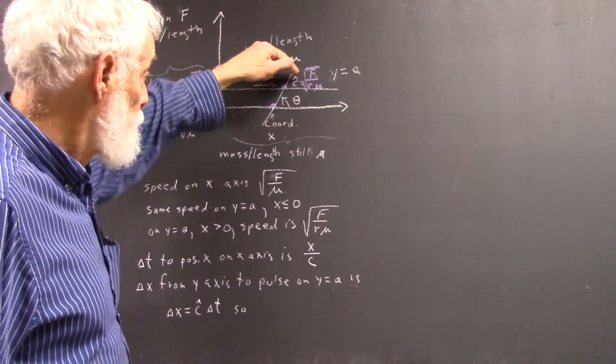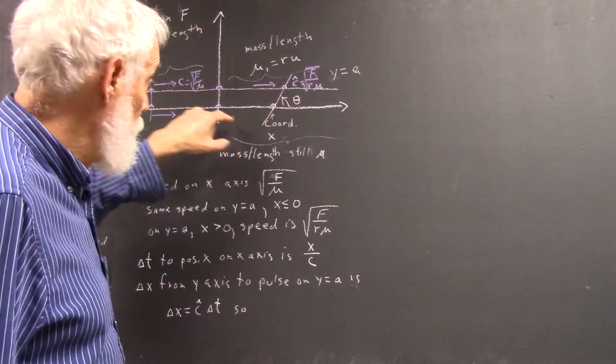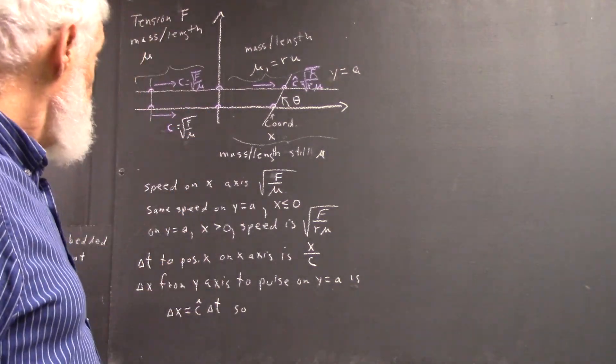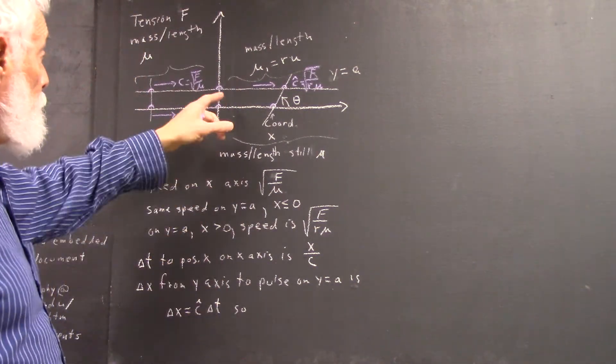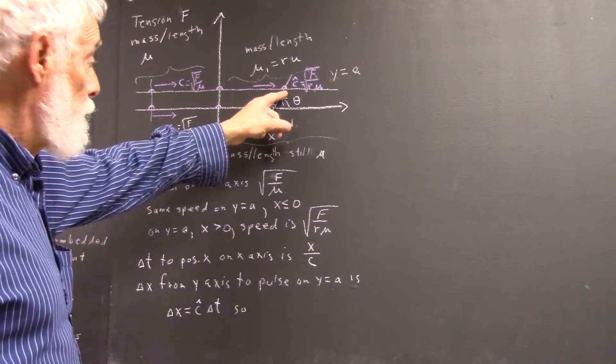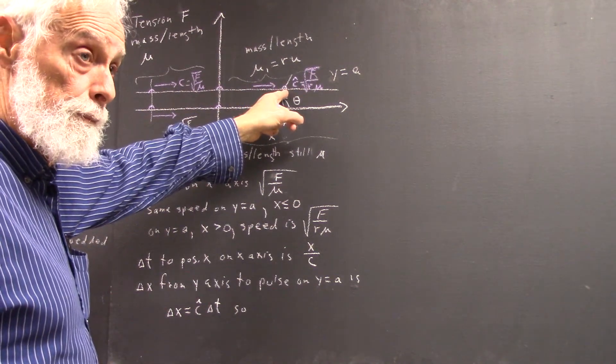And then this one travels at this speed, this one travels at the original speed. Okay, so you just multiply this speed by delta t and you find out where this one is, right?